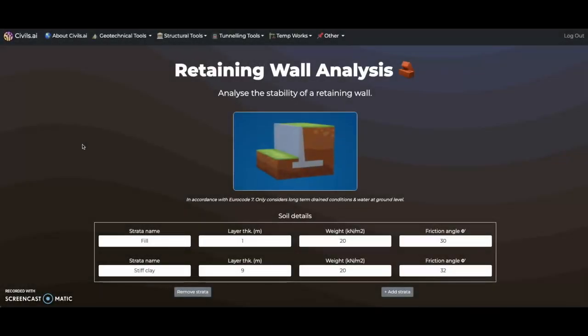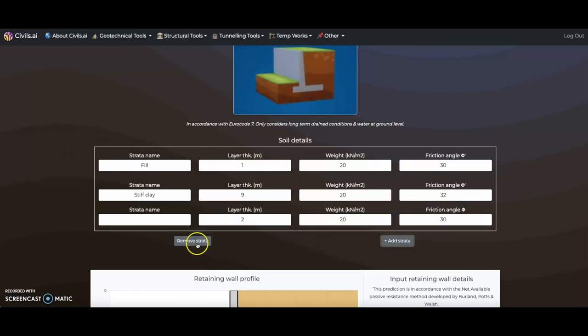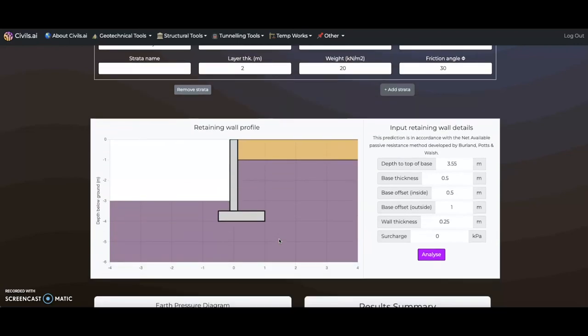Let's look at how civils.ai can be used to analyze a retaining wall. Here we can enter our drain soil properties, assuming the groundwater level is at surface level. Soil layers can be added and removed using these buttons. We can control the profile of the retaining wall using these menu options and apply a surcharge if needed.